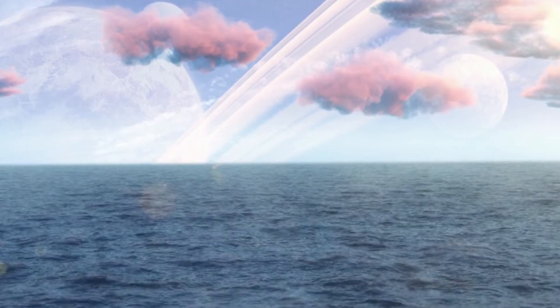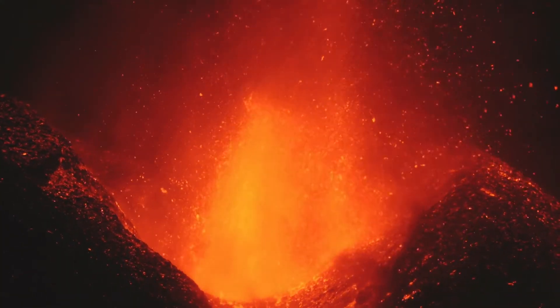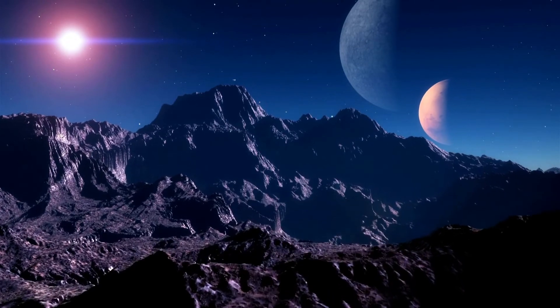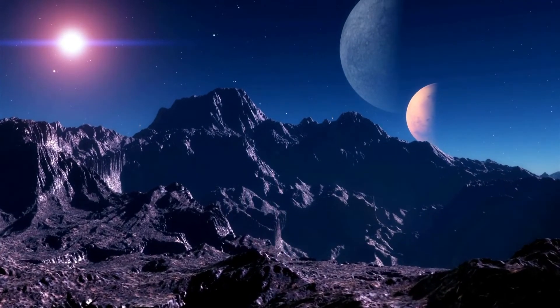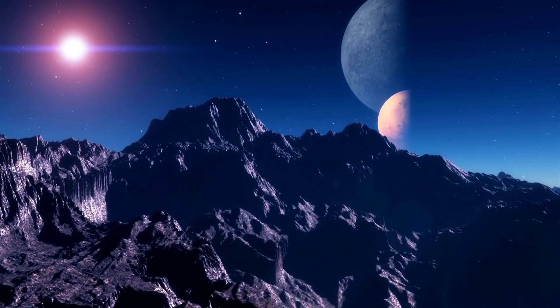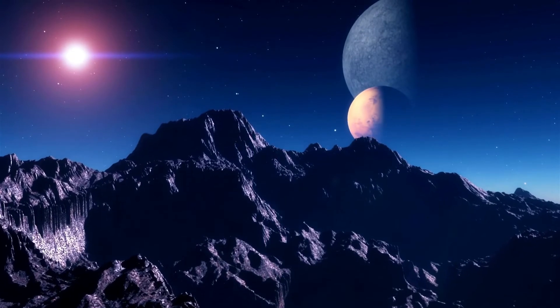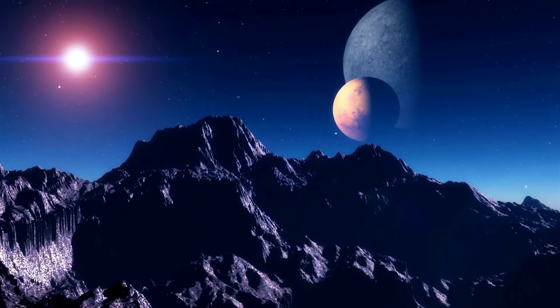However, new study shows that this planet could be more like Venus. Trappist-1e is another planet on the same system that orbits around the star in the habitable zone and is similar to Earth. It has about the same mass, radius, temperature, and gravity as Earth does.